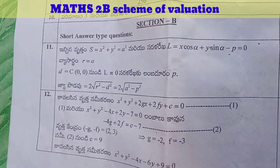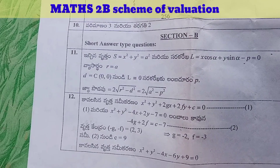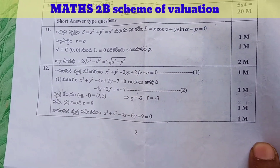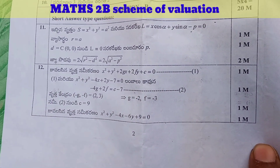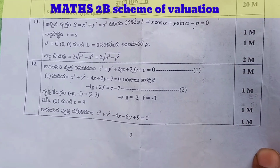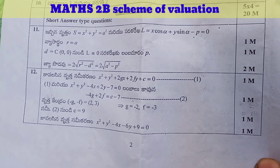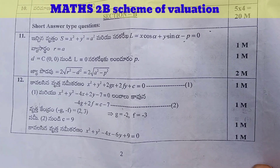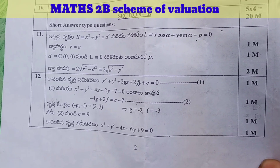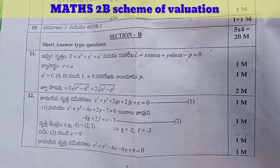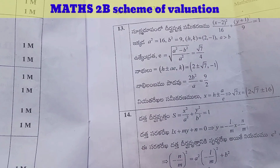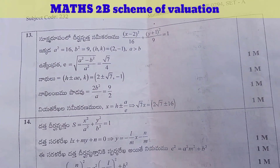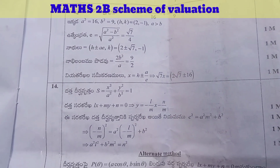The 11th question: given a circle, straight line, radius, perpendicular distance — if you have a scheme violation, don't worry.